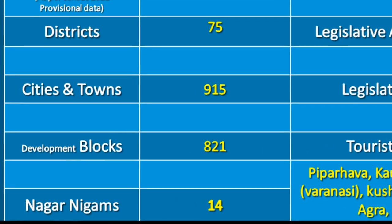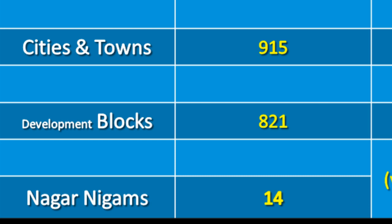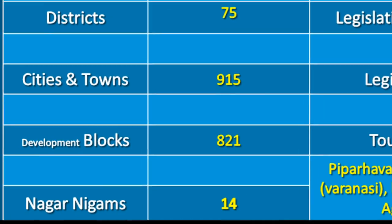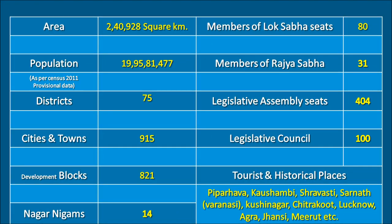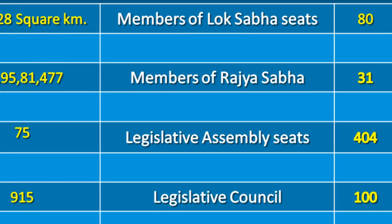There are also 915 cities and towns, 821 development blocks, and 14 nagar nigams in Uttar Pradesh. There are 80 members of Lok Sabha seats and 31 members of Rajya Sabha.